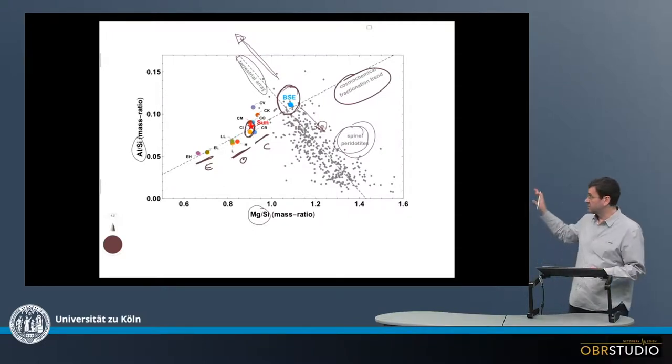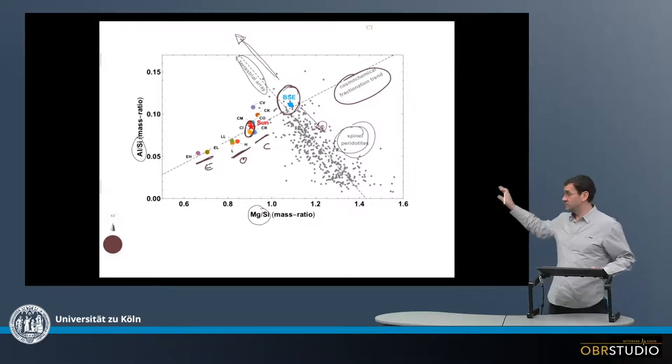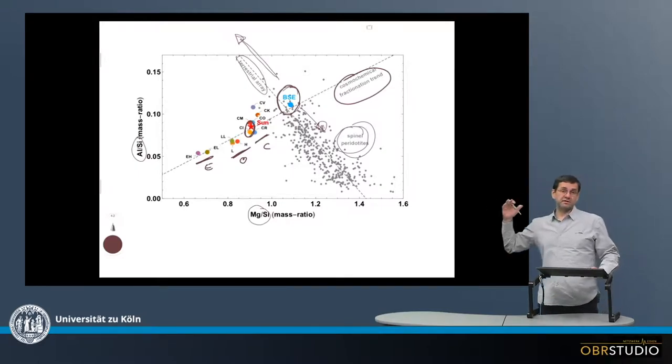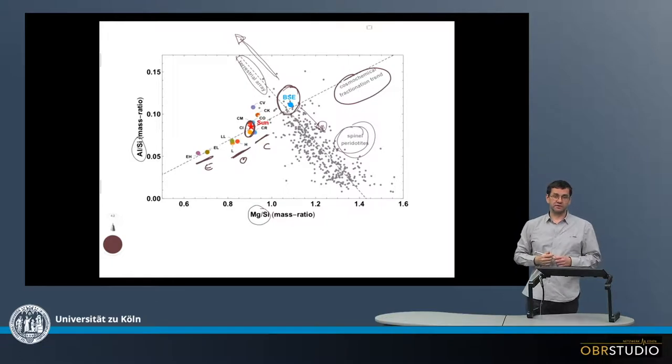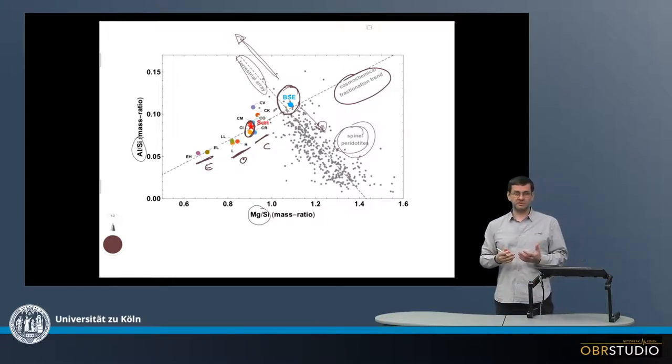Because the sun and the enstatite chondrites, they plot here with the carbonaceous chondrites. But Earth is at much higher magnesium-silicon ratios. And it's unclear why this is.